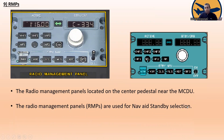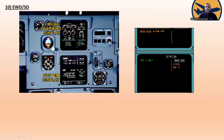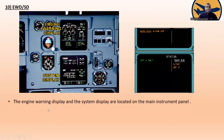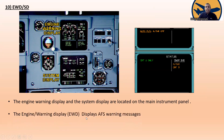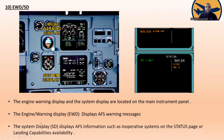Now the engine warning display and the system display. The engine warning display and the system display are located on the main instrument panel. The engine warning display shows auto flight system warning messages. The system display shows auto flight system information such as inoperative systems on the status page, including landing capability availability.